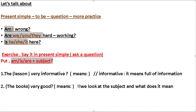When we have subject 'he', 'she', or 'it', we use 'is': Is he here? Is she here? Is it here? When we have subject 'I' we use 'am'; when we have subjects 'we', 'you', 'they' we use 'are'; when we have subjects 'he', 'she', 'it' we use 'is'.